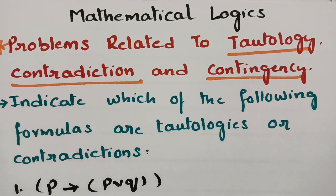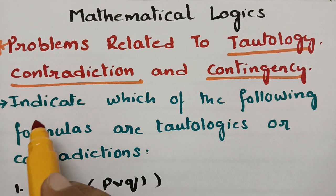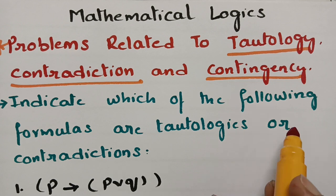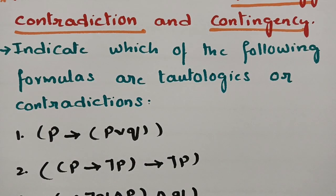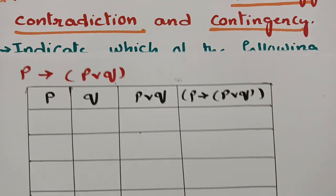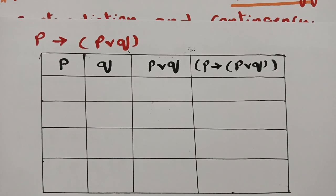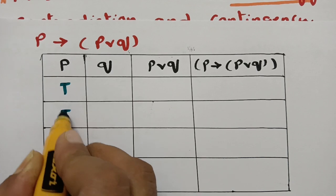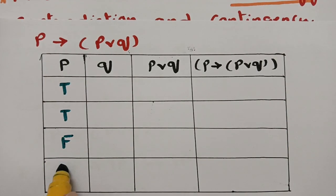Now we are going to solve the problems. The first problem here is: indicate which of the following formulas are tautologies or contradictions. The first formula is P implies (P or Q). We have to find the truth table for this. I am going to write the values for P as true, true, false, false and for Q as true, false, true, false.